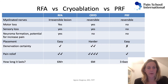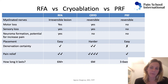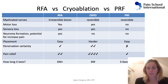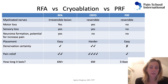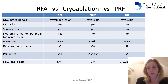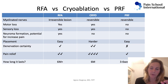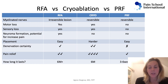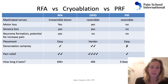If you want to compare radiofrequency with cryo and PRF, this table gives a detailed answer. Cryo creates a reversible lesion — this can make you happy or unhappy, but it is reversible. It creates just as much motor loss and sensory loss as the local anesthetic did, and that's not true for pulse radiofrequency. Because it doesn't damage the perineurium and epineurium, neuroma formation is really not likely, whereas with radiofrequency that might be a problem. Placement is harder for cryo than radiofrequency or PRF because the cryoprobe is so big.